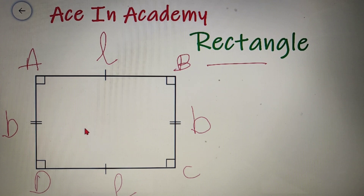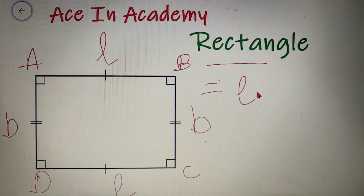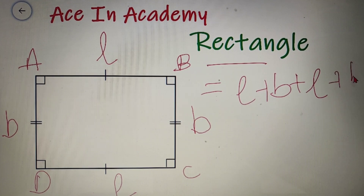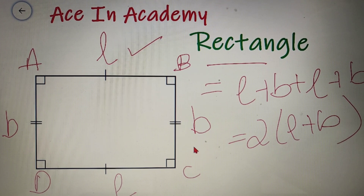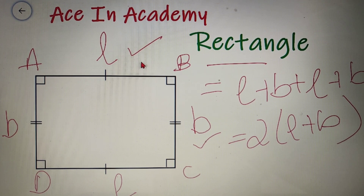The perimeter of a quadrilateral is equal to the sum of all its sides, so the perimeter of a rectangle is equal to L plus B plus L plus B, which equals twice of (L plus B). Here, L is the length of the rectangle and B is the breadth or width. One important fact is that the length of a rectangle is always greater than its breadth.